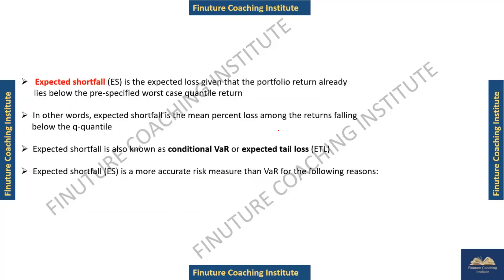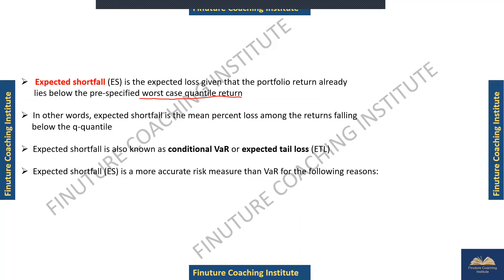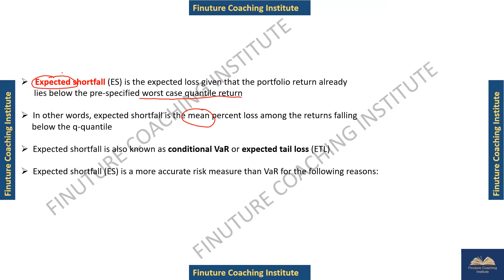Expected Shortfall is a loss given that a portfolio has already exceeded the VaR amount. It's a measurement of the worst-case quartile — it's the mean percentage of loss in the worst quartile. You can relate two words: 'expected' and 'worst quartile returns.' Very importantly, sometimes in questions it is also referred to as Conditional VaR.